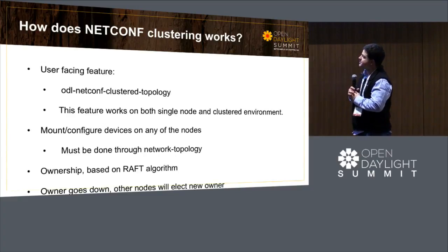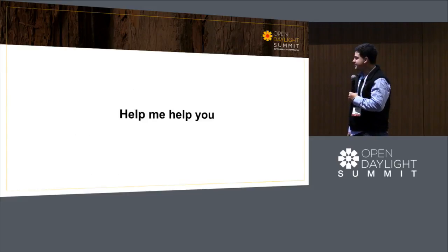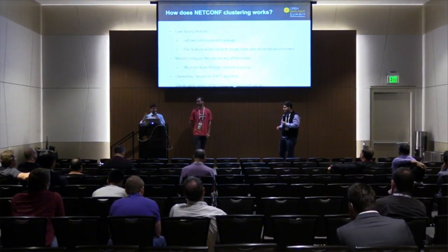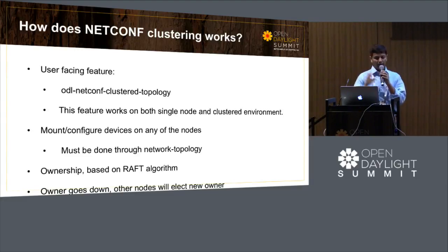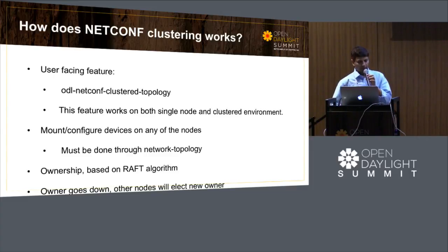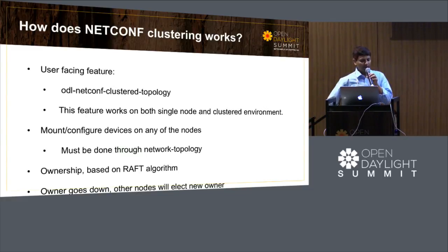Again, it's done through network topology, so it's exposed through REST on top of the controller. It's built off the Raft algorithm using clustering in the controller project. When the owner does go down, another node will be elected to take over. A particular controller in a cluster owns a netconf device, and you can make requests to any of the controllers in the cluster — the communication will happen from that owner controller to the device. If it goes down, through the entity ownership process, election happens and the new controller takes ownership. Do not install both ODL netconf clustered topology and ODL netconf topology together — they step on each other and can produce very unpredictable behavior.